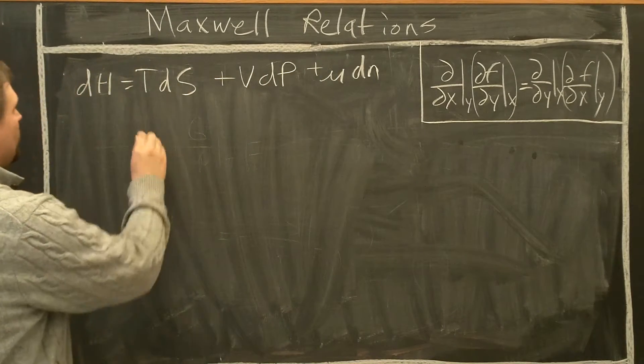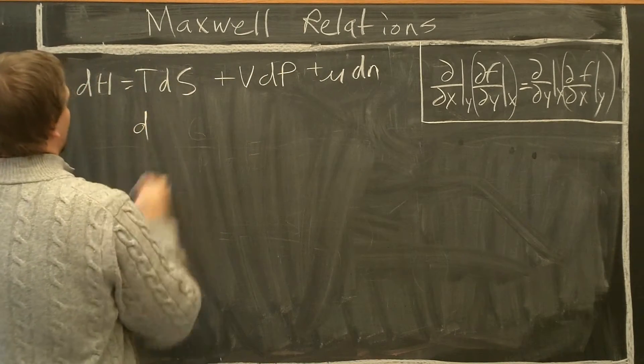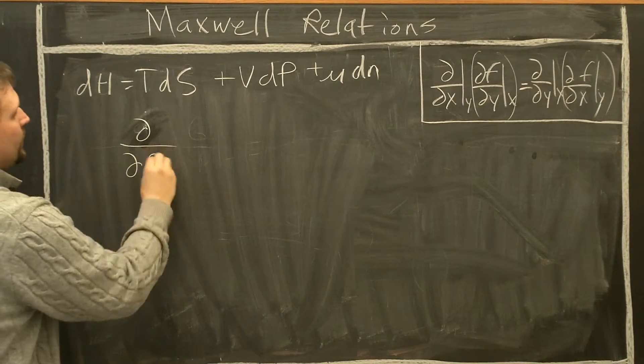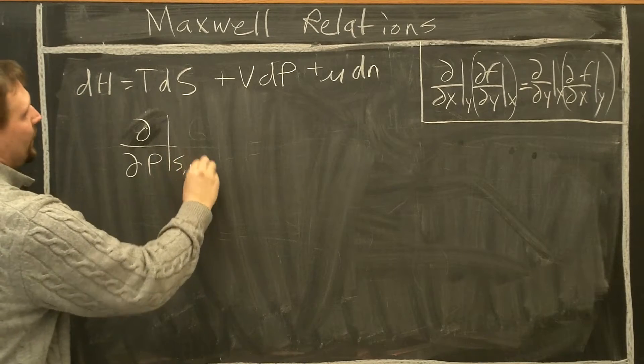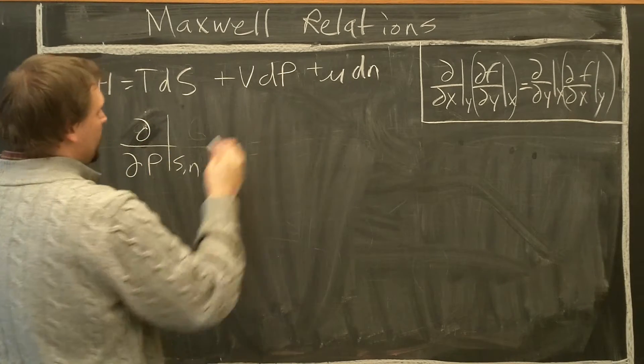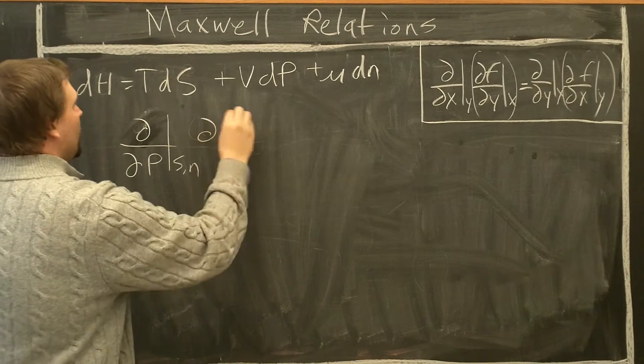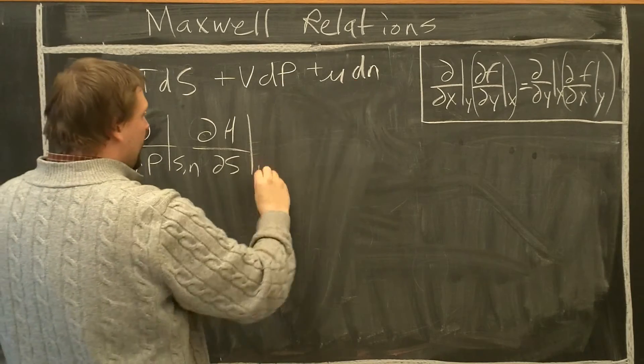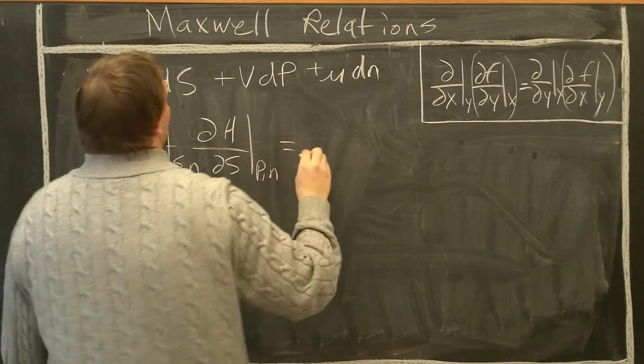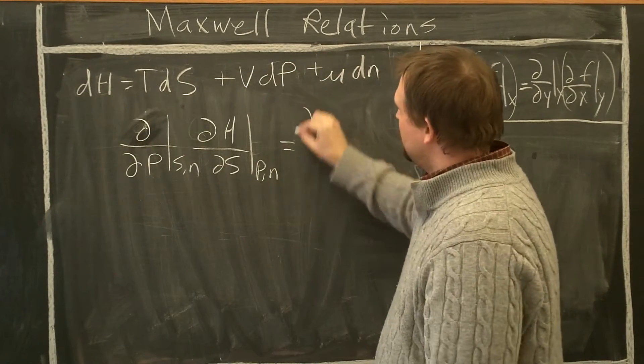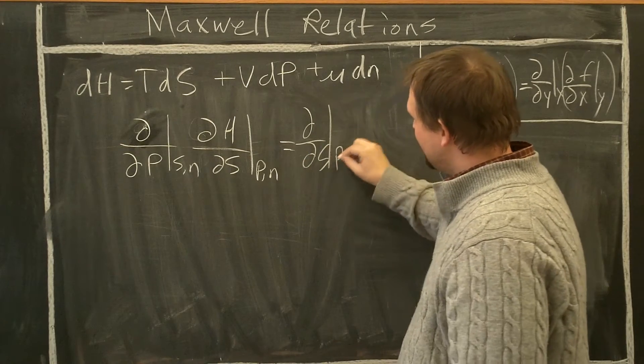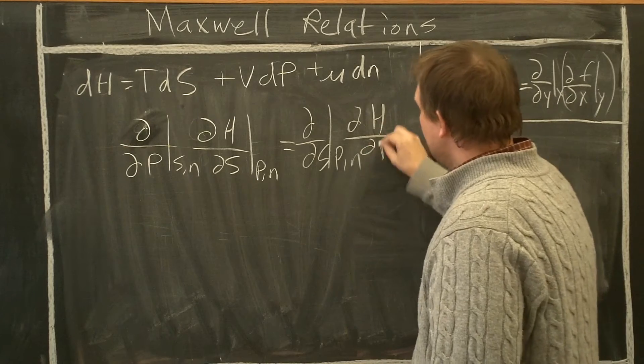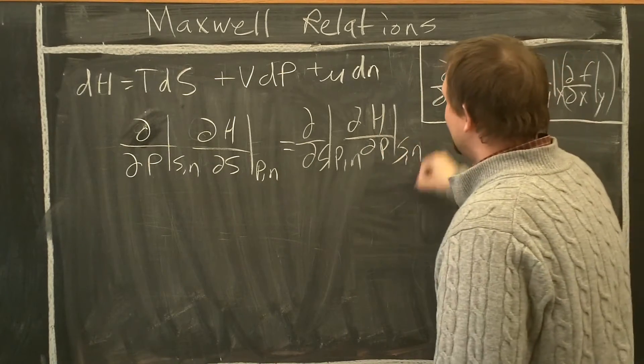Like before, let's start with this equation. Partial with respect to P at constant S and N. So we're holding S fixed and N fixed for this derivative of partial H with respect to S, holding the other things constant, P and N. This equals partial with respect to S holding P and N constant of partial H with respect to P holding S and N constant.